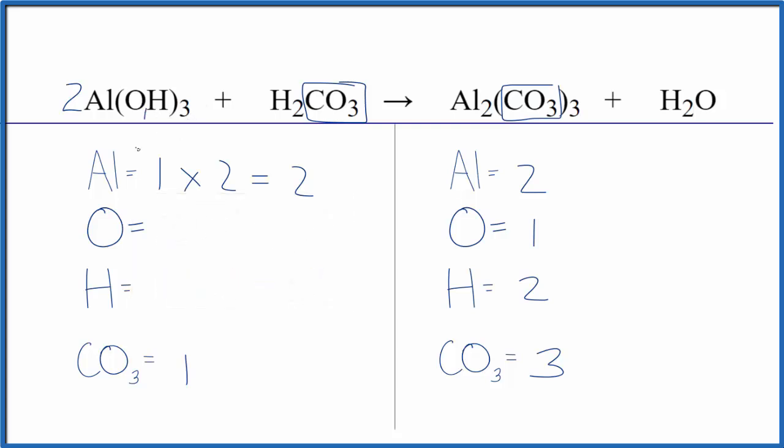So for the oxygens, we have three times the one. That's three times two. We have six of them. Three times the one times two. We have six hydrogens, plus we have these two hydrogens here. So we have eight total hydrogen atoms. So we've balanced the aluminums.